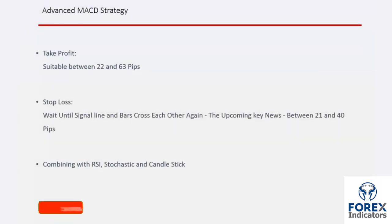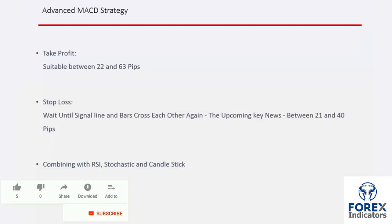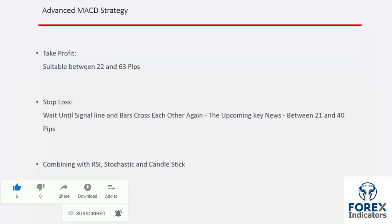Stop loss price can be determined with different methods. SL can be placed on the spot where the signal line passes the bars again. SL can be specified based on the analysis of future major calendar news. SL can also be 21 to 40 pips away from an entry price.